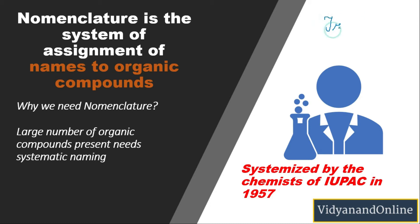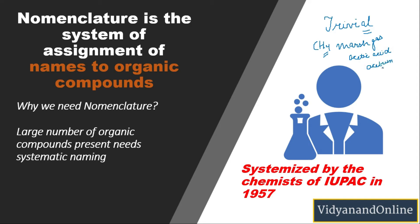Initially we had the trivial system to name compounds. In the trivial system, we would look at how a compound was obtained. For example, methane was named 'marsh gas' because it was obtained from marshy places. Acetic acid is derived from the Latin word 'acetum,' which means vinegar — that is why the name acetic acid came about. However, nomenclature was systemized by the chemists of IUPAC in 1957.